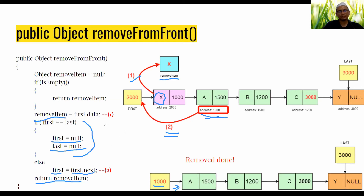To wrap up, removeFromFront has two main steps: first, store the first node's data into removeItem; second, make first point to the second node to effectively remove the first node. Finally, first points to the second node and the method returns the removed data.